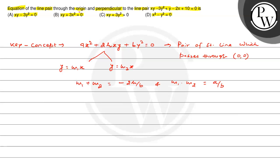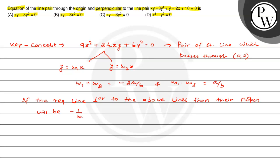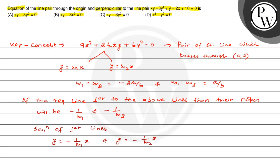अब हमें चाहिए एक ऐसा line जो origin से ही pass हो और साथ ही perpendicular भी। तो if the required line is perpendicular to the above lines, then their slopes will be: पहले line का slope minus 1 by m1 होगा, and दूसरे line का minus 1 by m2 होगा। यानि equation of perpendicular lines, origin से pass होने वाला, y = minus 1 by m1 into x, and y = minus 1 by m2 into x।